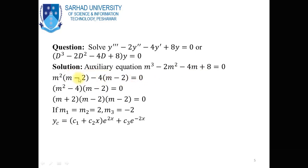This gives (m² - 4)(m - 2) = 0. Using a² - b² = (a + b)(a - b), we write (m + 2)(m - 2)(m - 2) = 0. So we obtain three roots: m1 = m2 = 2 and m3 = -2. These two roots are real and repeated, and the third is real but different. The complementary solution is yc = (c1 + c2x)·e^(2x) + c3·e^(-2x).